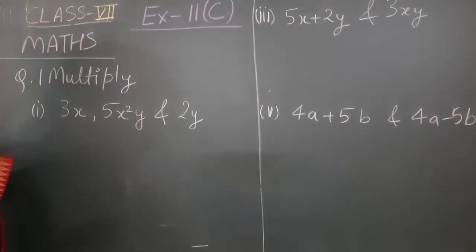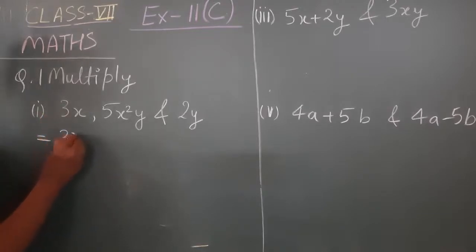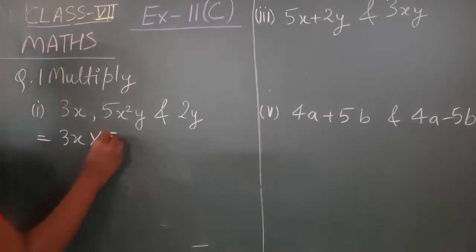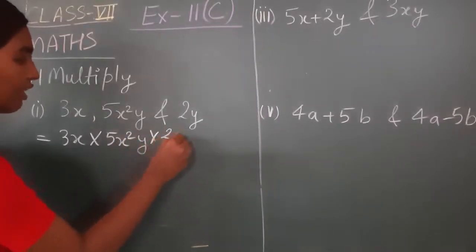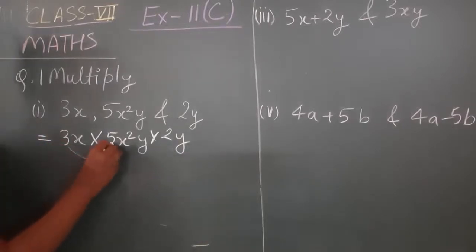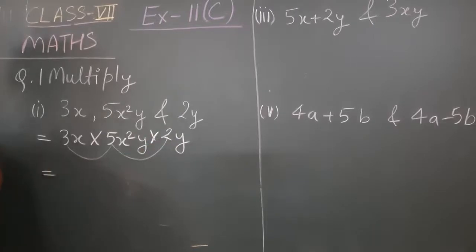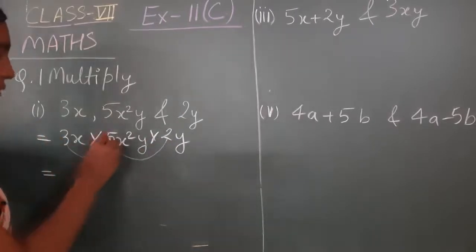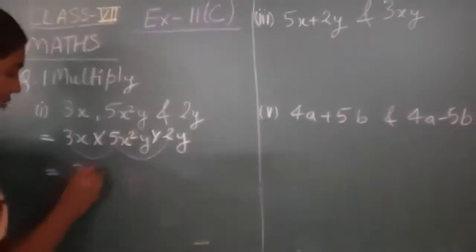Look here how you have to solve this. The question says 3x multiplied by 5x²y multiplied by 2y. Numbers will get multiplied with numbers: 3 multiplied by 5 is 15, and 15 multiplied by 2 is 30. So the number part of the answer is 30.